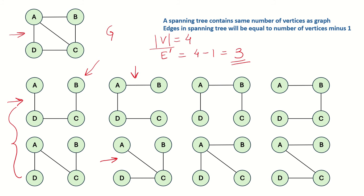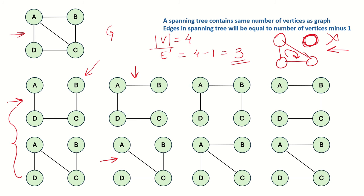In each spanning tree, the number of edges is 3. A spanning tree cannot have any cycle. So if we have 4 vertices and 3 edges but this configuration is not a connected graph — as this vertex is isolated — and there is also a cycle, we cannot call this a spanning tree. All the vertices need to be connected with each other.